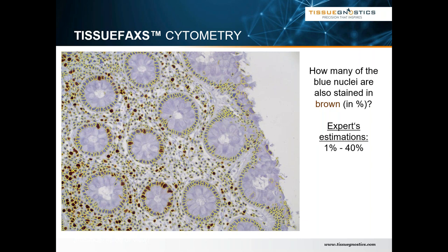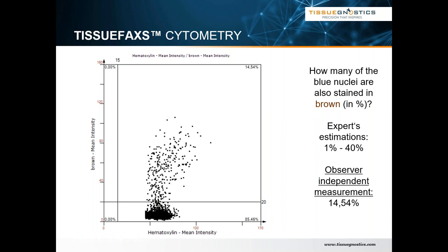Once we have these nuclei segmented, we can measure the expression of the brown channel using the contours of the nuclei that we found. This enables us to get an observer-independent measurement, along with a tool that looks very similar to flow cytometry — the famous scattergram, which you'll see in all of our image analysis software. That's probably also why DeNovo and Tissue Gnostics partnered up — because of our shared taste in image analysis and flow cytometry. You set your cutoff using an isotype-matched negative control in your experiment and can apply that to the rest of your sample, always getting an observer-independent measurement.